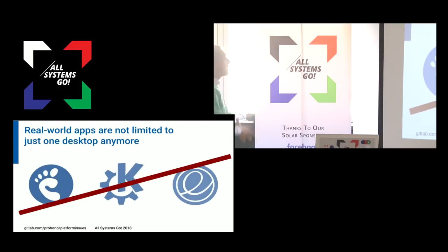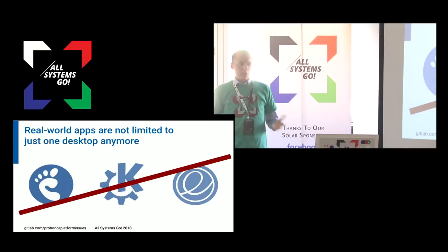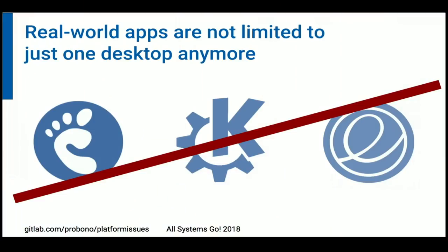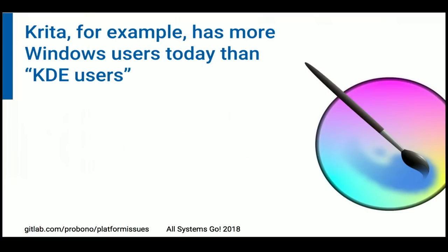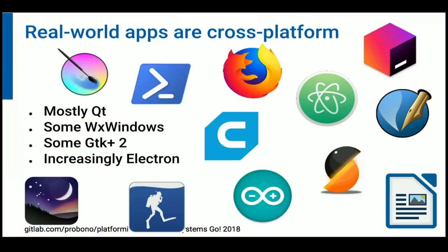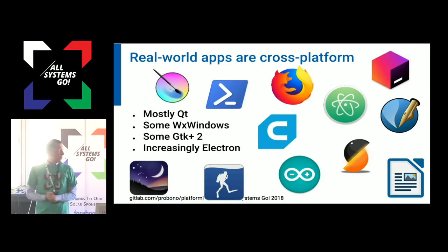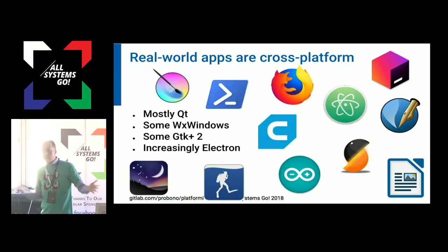Real-world apps are not limited to one desktop anymore. In the earlier times of Linux on the desktop there was this idea that GNOME comes with its own applications and KDE with a totally different set. This is changing. Take Krita, for example — it started as a painting application for the KDE desktop, but today it has many more non-KDE users than KDE users. Real-world apps are truly cross-platform: they run on Windows, on Mac, and they should run on all of Linux. Most are Qt-based, some are GTK-based, and increasingly we see more Electron apps.